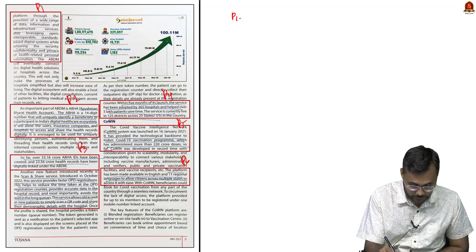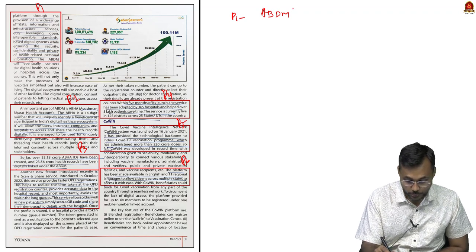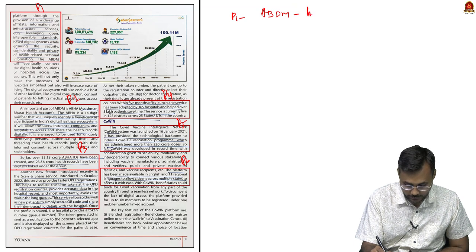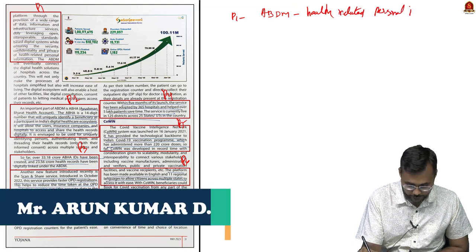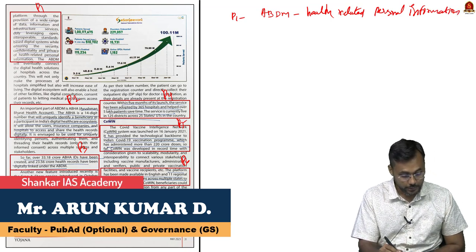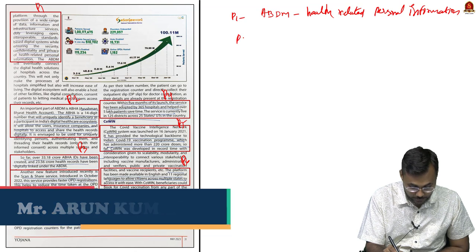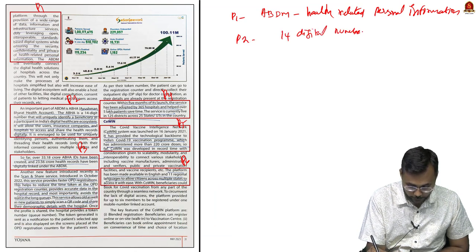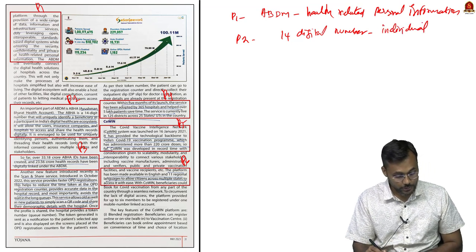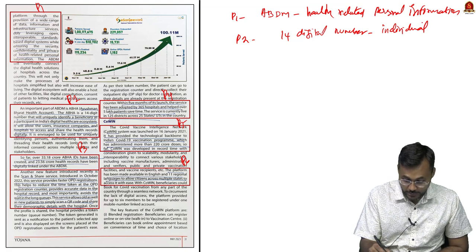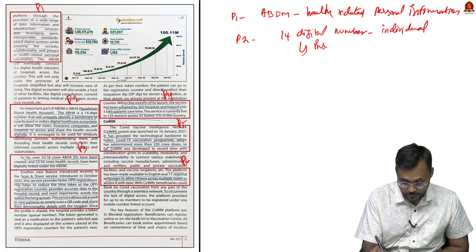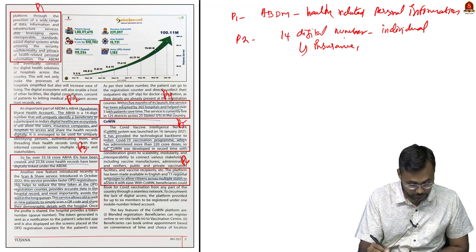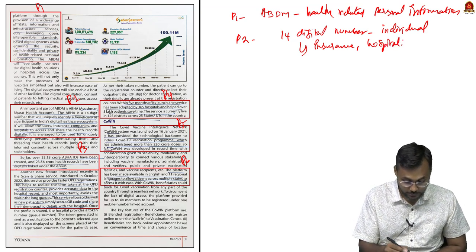Looking at government initiatives: paragraph 1 covers Ayushman Bharat Digital Mission, which stores health-related personal data and information. Paragraph 2 explains the mechanism: a 14-digit number is given to each individual under this mission, which can be used by other stakeholders like insurance companies and hospitals.